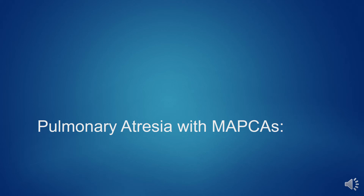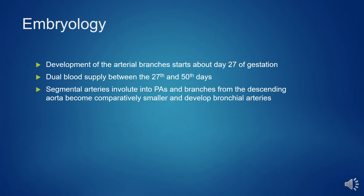Pulmonary atresia with VSD and major aortopulmonary collaterals is a congenital heart disease typified by a vast spectrum of physiologic and morphologic variants. As a whole, these defects represent about 1% of congenital heart defects. The major variability occurs with the anatomy and adequacy of the pulmonary vascular blood flow. The disorder has a reported incidence of 0.7 per 10,000 live births.